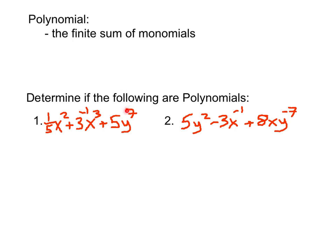Looking at this first example, it has three different terms — three different monomials — and we need to make sure that each term is a monomial. A monomial is a product of real numbers and variables. So for this first example we have three terms. The first term is one-fifth x squared — that is a monomial. The exponent on the variable is positive and it's not a fraction, so we're good.